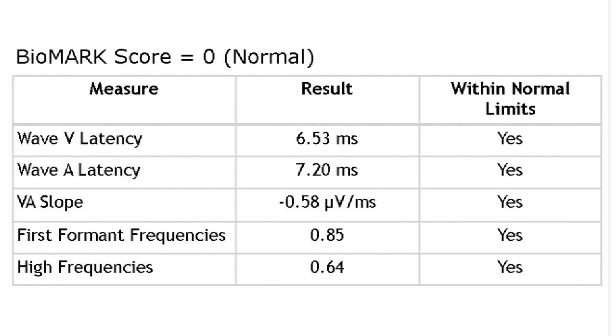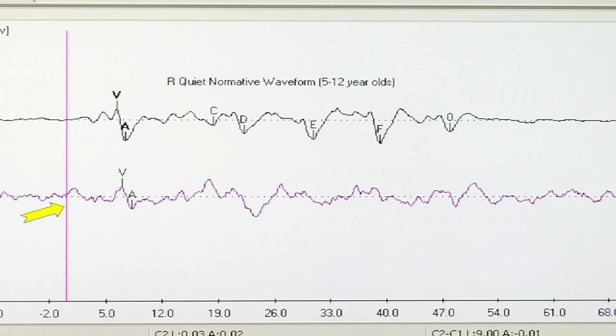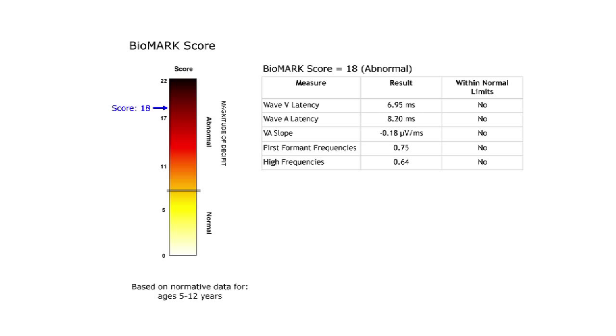This is an example of a normal response. An abnormal response will show less definition in the response peaks and diminished repeatability across the trials. This will result in multiple measures falling outside of normal limits, affecting the Biomark score.